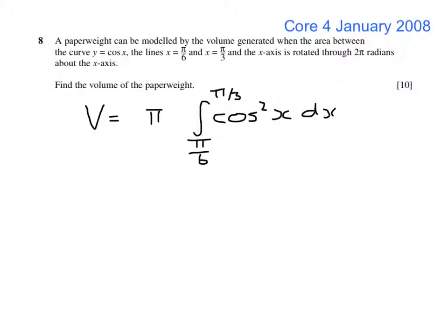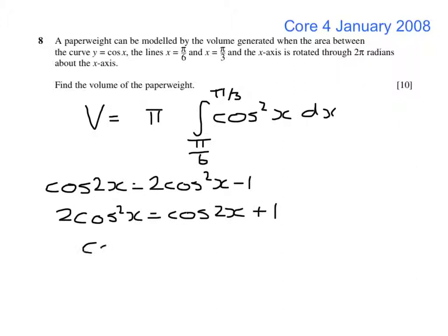To integrate cos squared, we're going to use the double angle formula. The cos of 2x is 2 cos squared x minus 1, so 2 cos squared x is cos 2x plus 1, therefore cos squared x is 1 half of cos 2x plus 1.